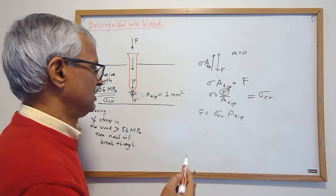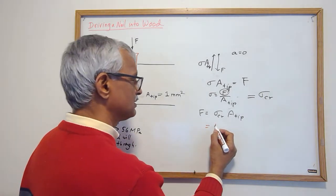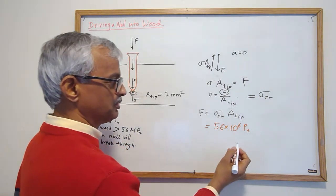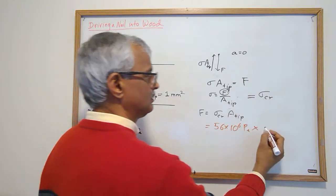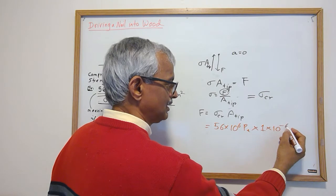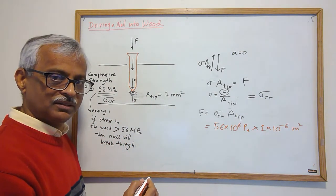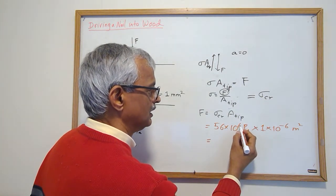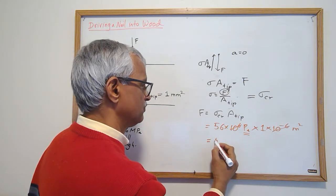So let's look at what we have. Sigma critical is 56 megapascals, so I write it in pascals, which is newtons over meter squared. And A_tip is one millimeter square, so that's one millimeter times one millimeter, or 10^-6 meter squared. This cancels that—pascals times meters squared gives newtons—so 56 newtons.